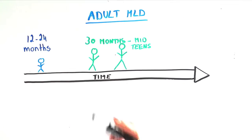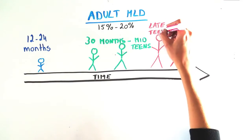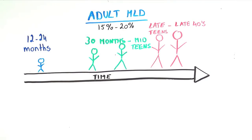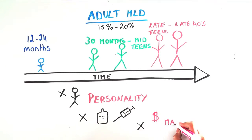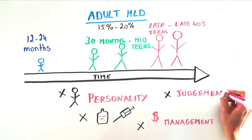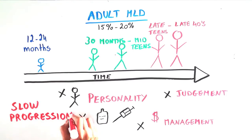Lastly, adult MLD represents 15-20% of cases and occurs at any adult age, from late teens through the late 40s and beyond. Signs of adult MLD include personality changes, alcohol or drug abuse, poor money management, forgetfulness and poor judgment, among others. These symptoms can develop slowly over 10-20 years before the disease advances severely.